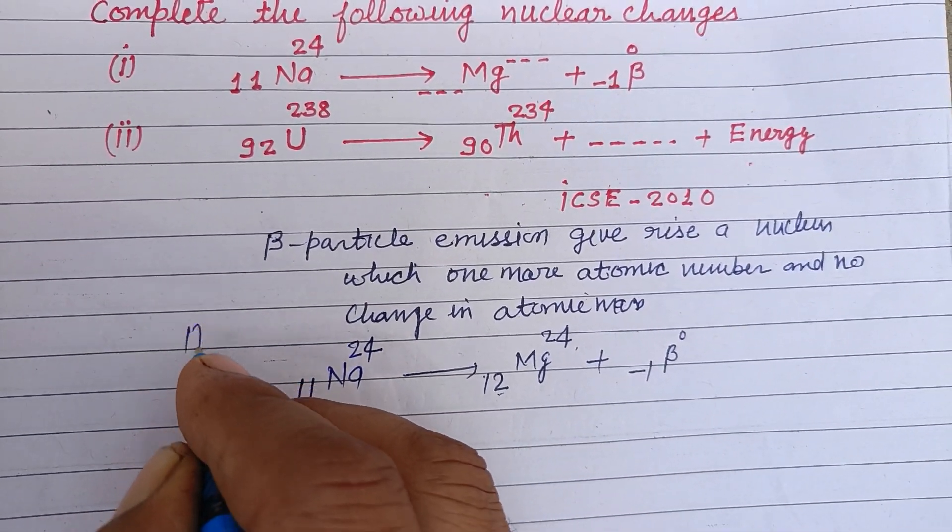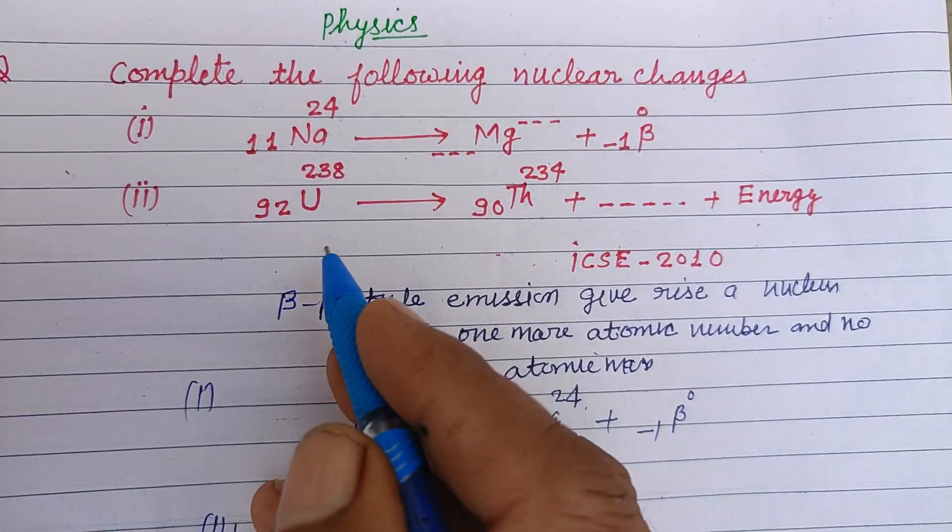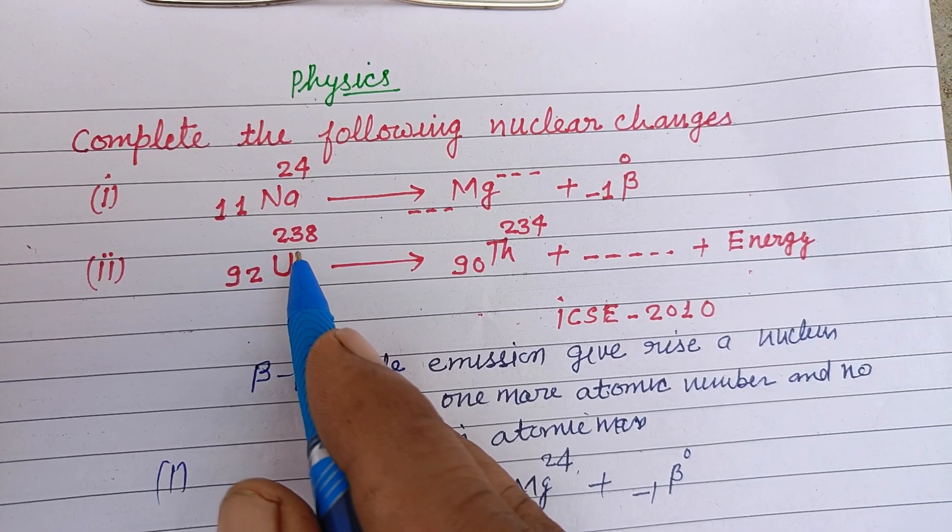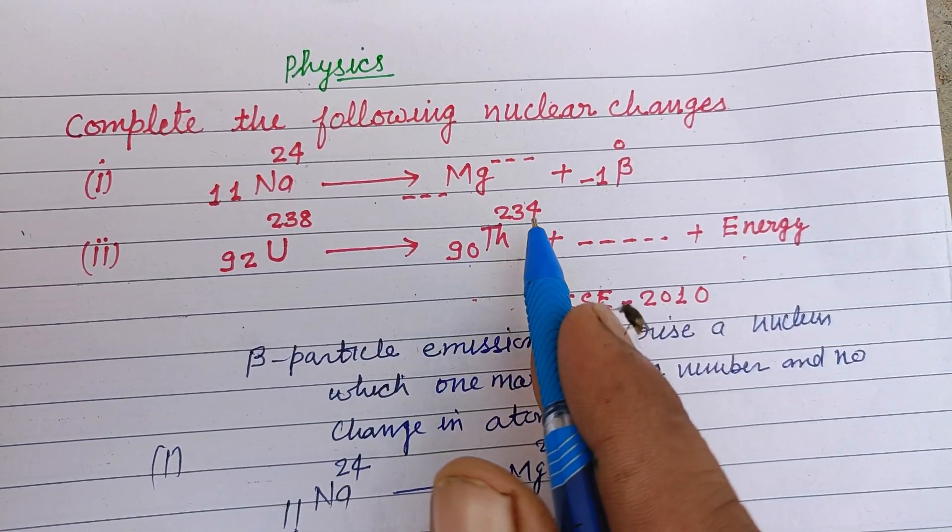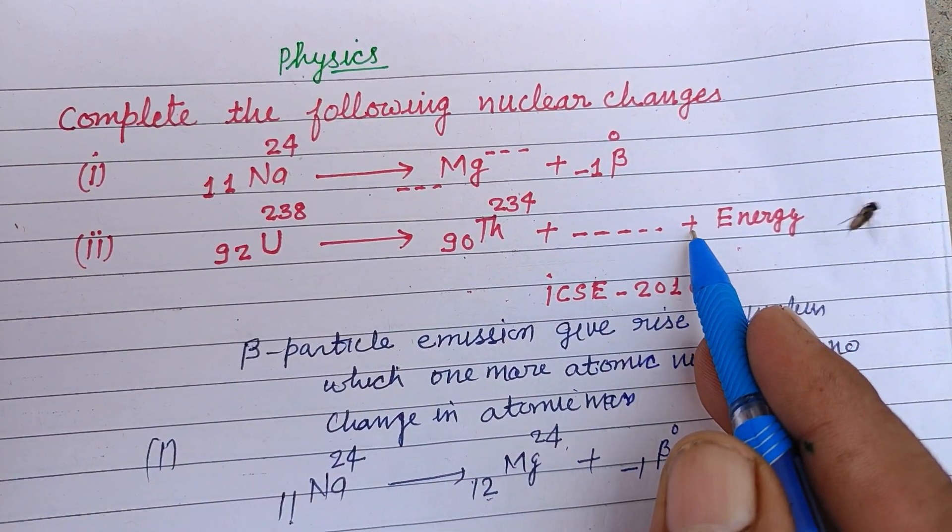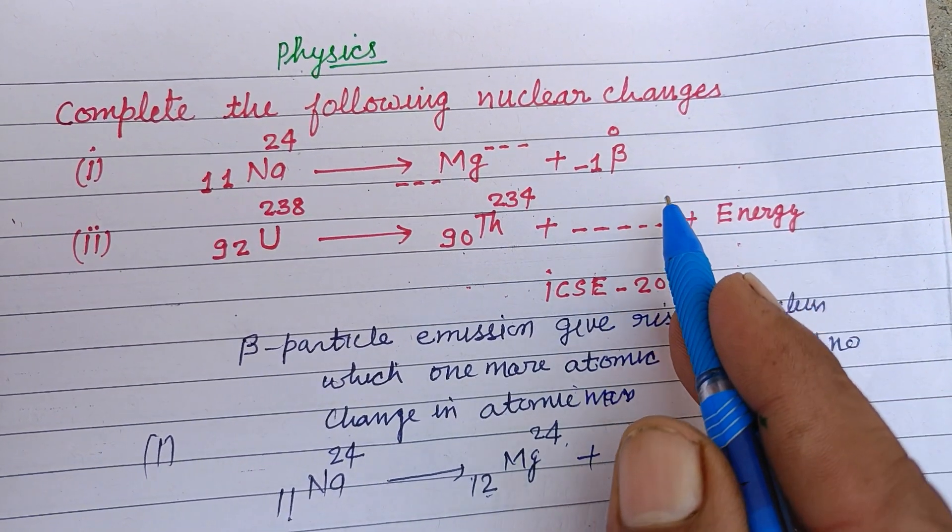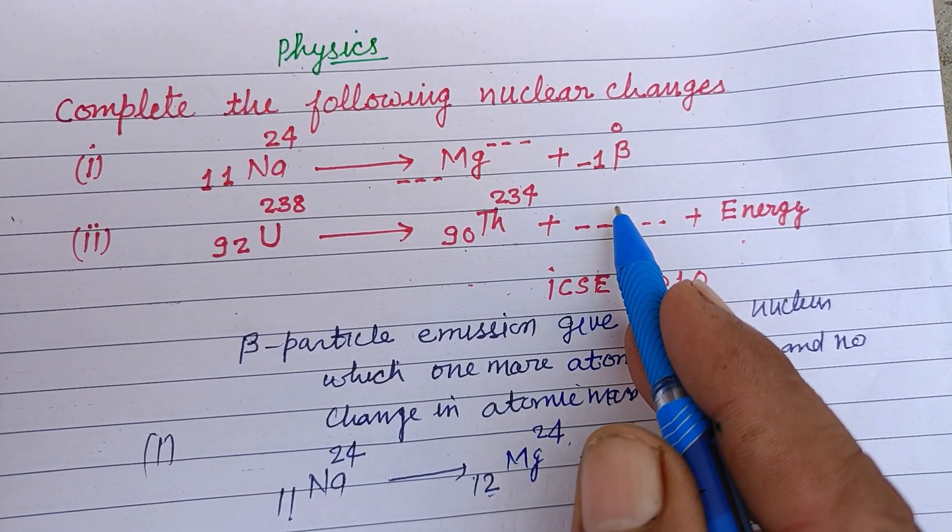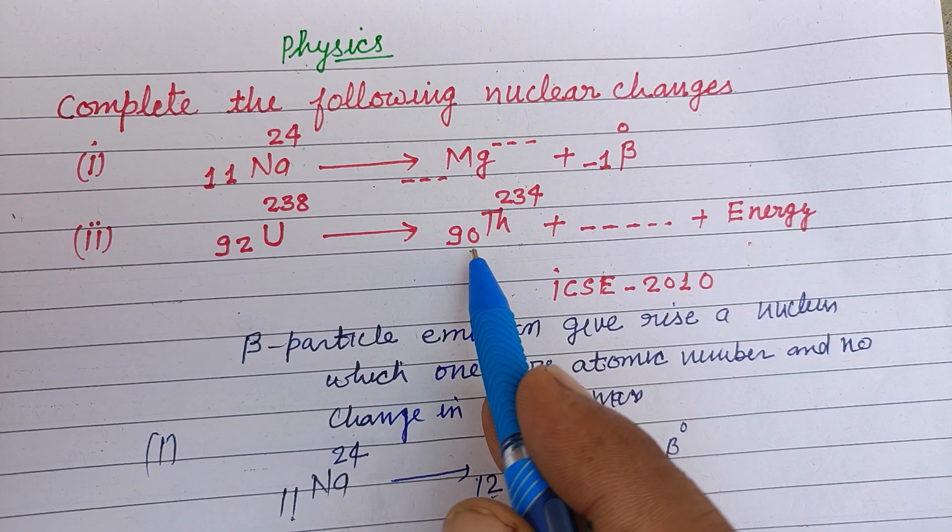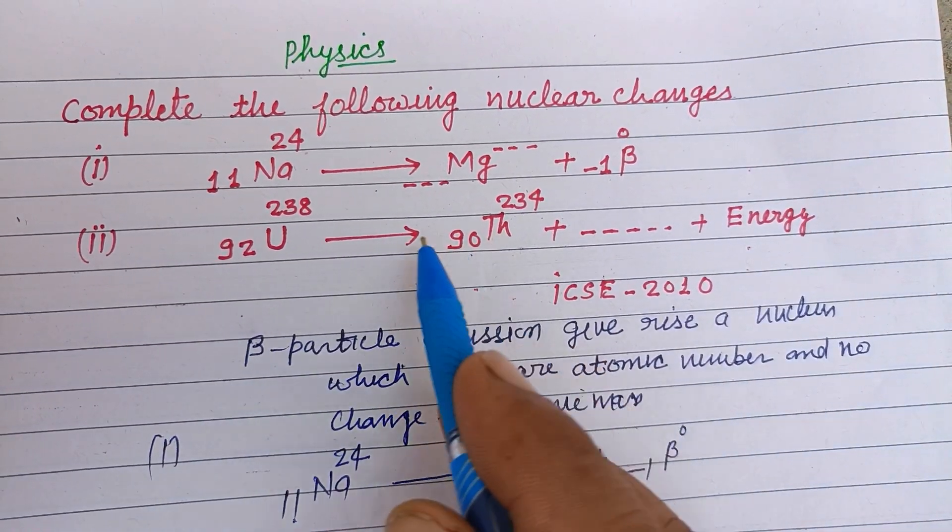In the second problem, here 92 uranium 238 gives rise to 90 thorium 234 plus energy. Here in this space, if we balance the given equation.